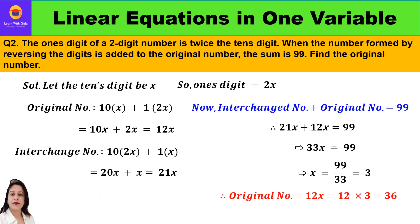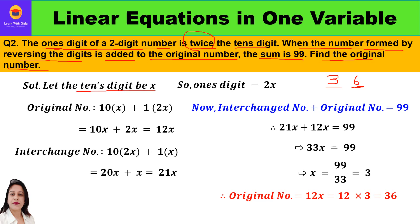Now let us take up the second question. The ones digit of a two-digit number is twice the tens digit. When the number formed by reversing the digits is added to the original number, the sum is 99. Find the original number. Like in the example of 36, if the ones digit is 3 then the tens digit would be twice of 3, which is 6. Similarly here, one's digit is twice the tens digit, so let the tens digit be x and the ones digit will be 2x.